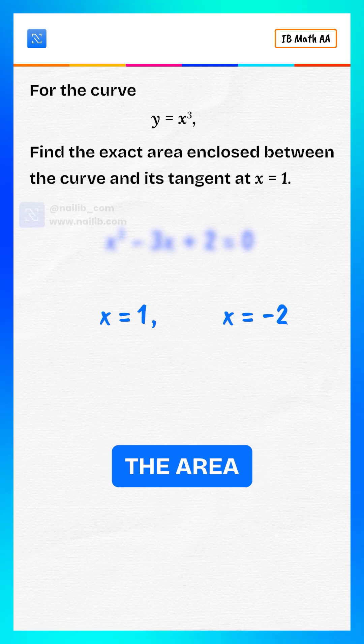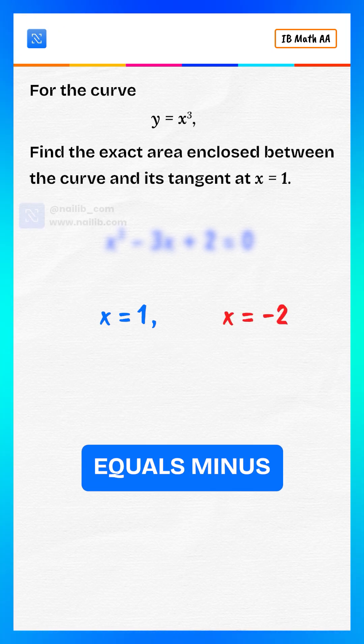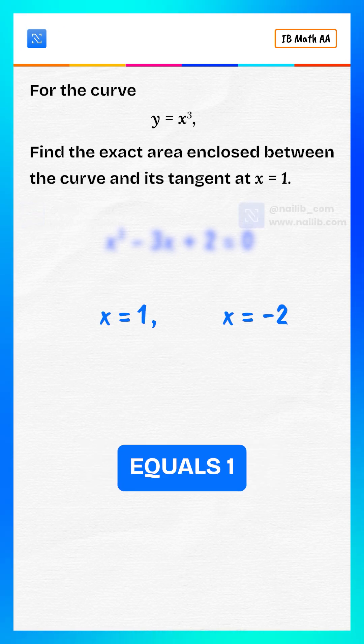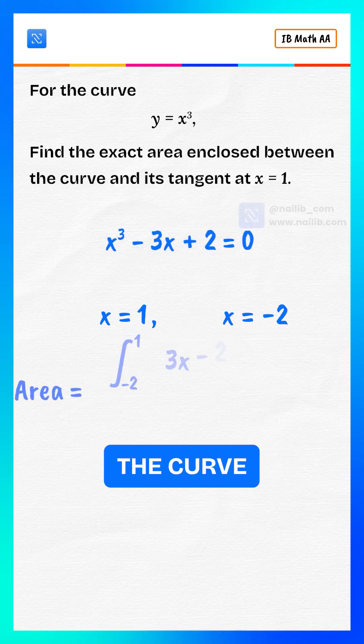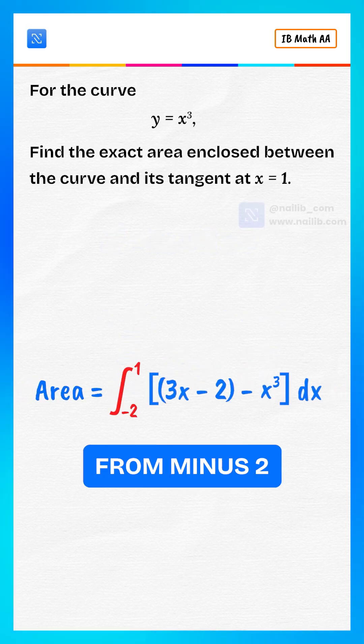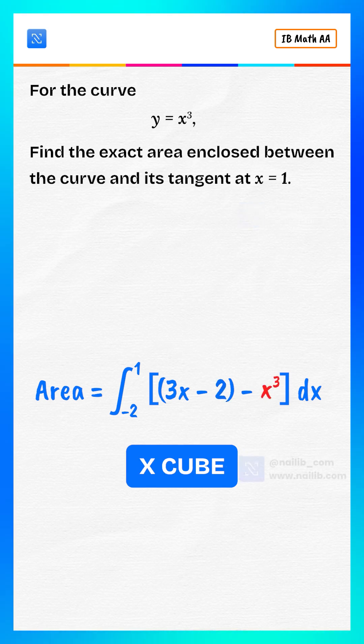Now set up the area integral. Between x equals minus 2 and x equals 1, the tangent line is above the curve. So area equals integral from minus 2 to 1 of 3x minus 2 minus x cube dx.